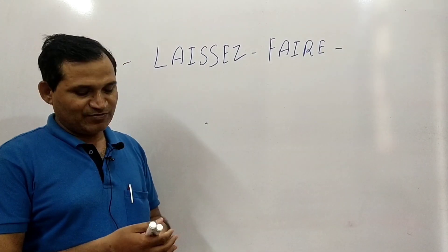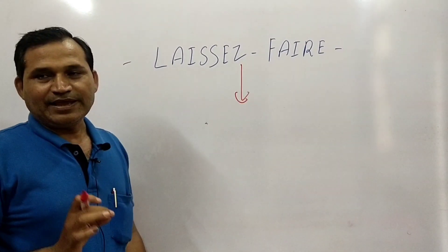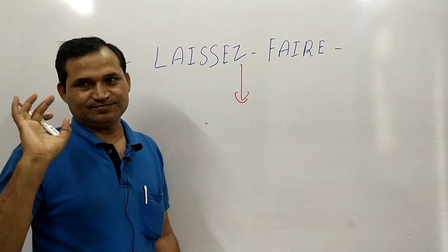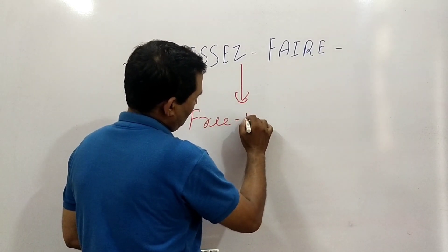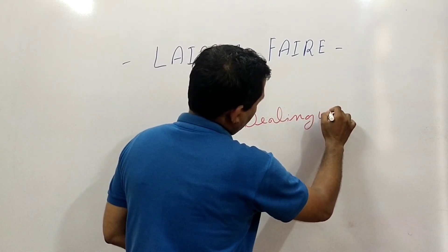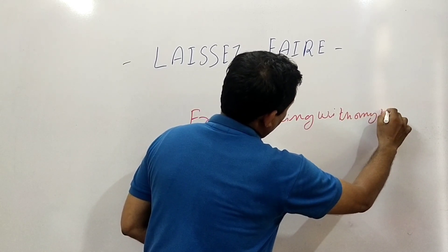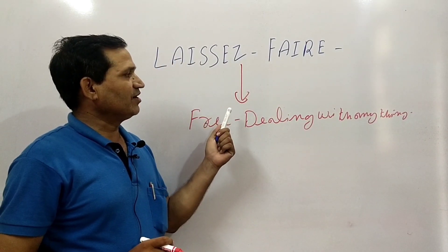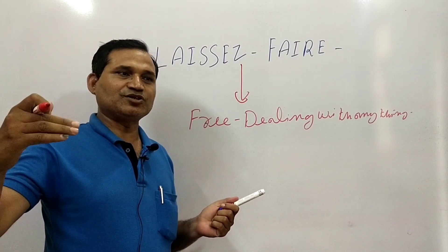And second, you know what's the meaning of this? This is the meaning of free dealing with anything — free dealing. If you can give a different meaning, then it is called the natural speed or natural pace.